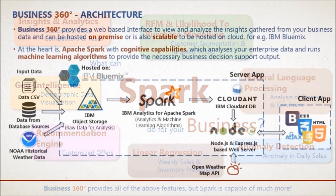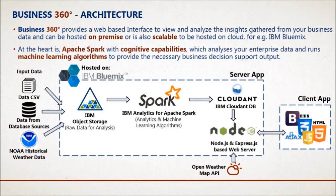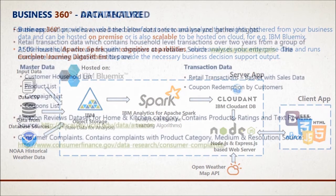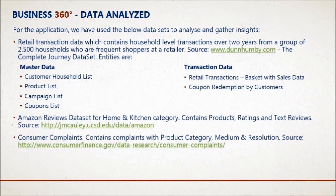Business 360 is available as a web application hosted on IBM Bluemix. The IBM Analytics for Apache Spark module takes the raw data to run machine learning algorithms and stores the output in the Cloudant database. For the current use case, we have used retail transaction data containing household-level transactions over two years, as well as Amazon review data sets and consumer complaint data sets.